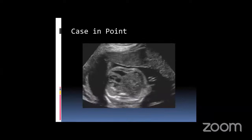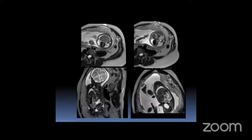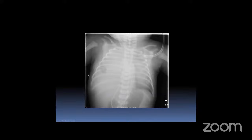Another case: a fetus referred for pericardial effusion and abnormal cardiac axis. On ultrasound we saw the pericardial effusion, but the abnormal cardiac axis prompted MRI. On MRI we found this fetus had a right-sided congenital diaphragmatic hernia — the heart was pushed to the left, liver was up in the chest, and bowel loops were also in the chest. This was completely misdiagnosed as pericardial effusion on ultrasound. A postnatal radiograph confirmed the diaphragmatic hernia.